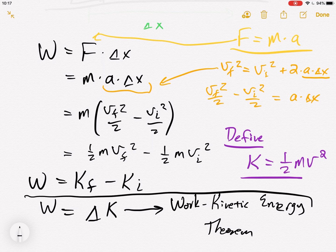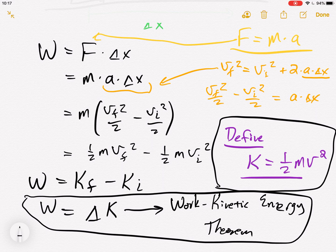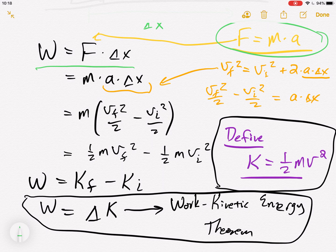This equation is called the work kinetic energy theorem. And that comes from this definition for kinetic energy. Or really, we just derived kinetic energy from the definition of work, from Newton's second law, and from an equation that we got from kinematics.